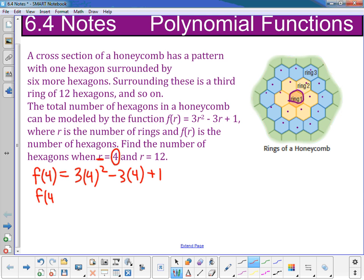And then I simplify each part of it. So I have f(4) = 3 × 4². 4 squared is 16, and 16 times 3 is 48. So that's 48 - 3 × 4, which is 12, plus 1.